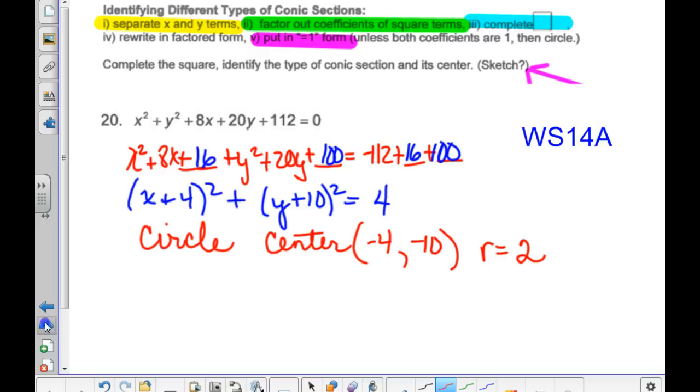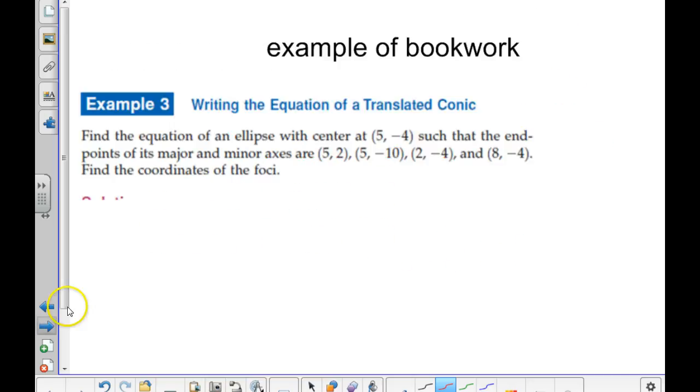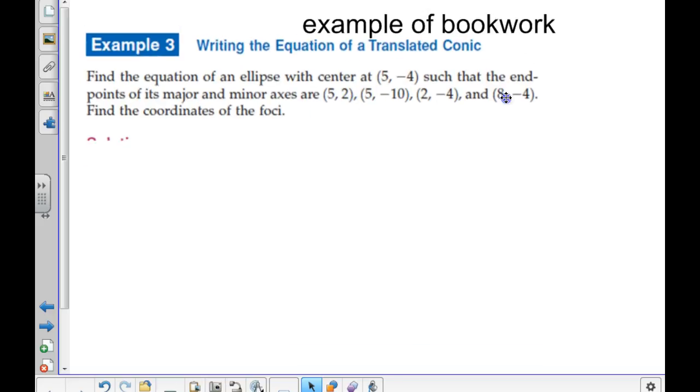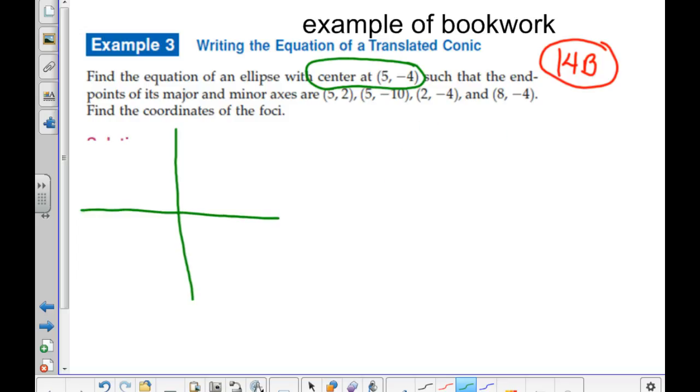I'm going to talk about Worksheet 14B. There are two examples out of the book that I wanted to go over. So I would suggest you need to write these down on 14B. This tells us some very important information. We have an ellipse with the center at 5, negative 4. The endpoints of its major and minor axis are given. This particular book does not call them vertices and co-vertices. It just says all four of them are vertices. If we sketch it out, we should be able to figure out which ones are further out, which would be the major axis or the vertices.